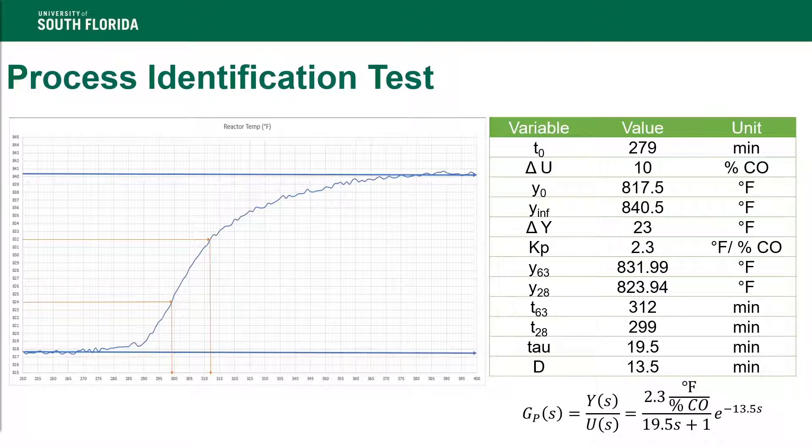Initially, the simulation was run with no step changes to get a sense of how the system behaves when not under control. The next step was to identify the process transfer function, which was done by observing how the reaction temperature responded to a step change.